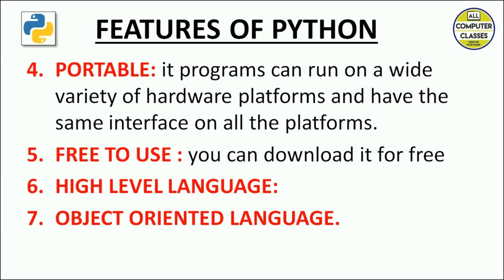The next important feature is object-oriented language. One of the key aspects of Python is its object-oriented approach — it recognizes the concepts of classes and objects. Object-oriented programming methodology is based on principles such as abstraction, encapsulation, inheritance, polymorphism, classes, and objects. You will learn these in detail in the future.